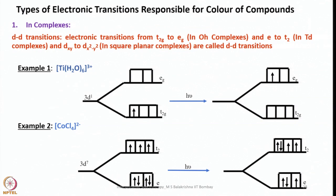Now let us look into the DD transition. DD transition arises because of filling of electrons into the d orbital. In an octahedral complex in a crystal field, the d orbitals remove their degeneracy and split into T2g and Eg levels. T2g is lower in energy, Eg is higher. T2g consists of dxy, dxz, and dyz, whereas Eg consists of dx²-y² and dz². In tetrahedral complexes the opposite occurs: T2 is higher in energy and E is lower, based on the orientation of orbitals and approach of ligands toward the metal.